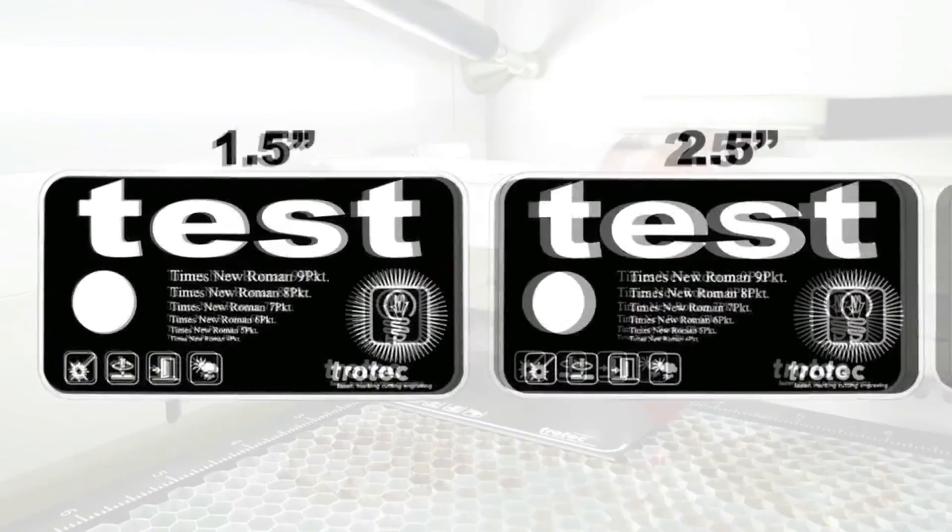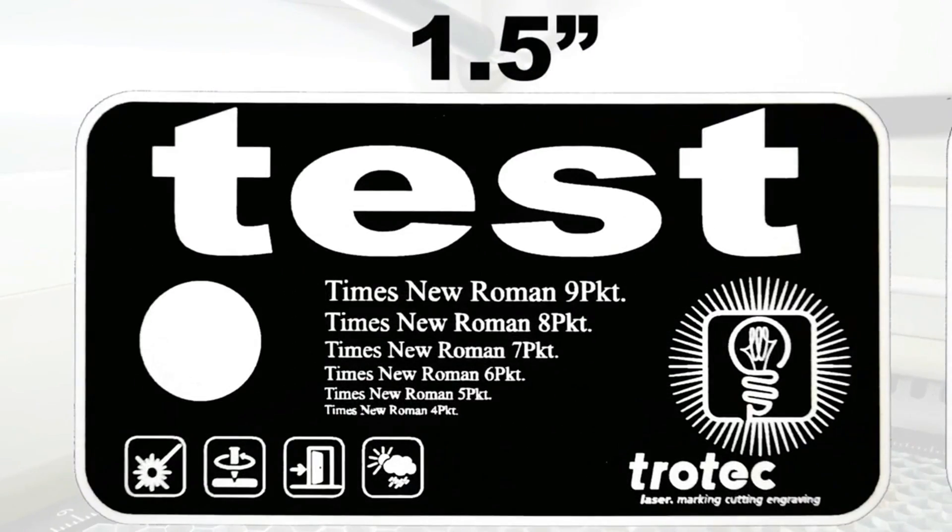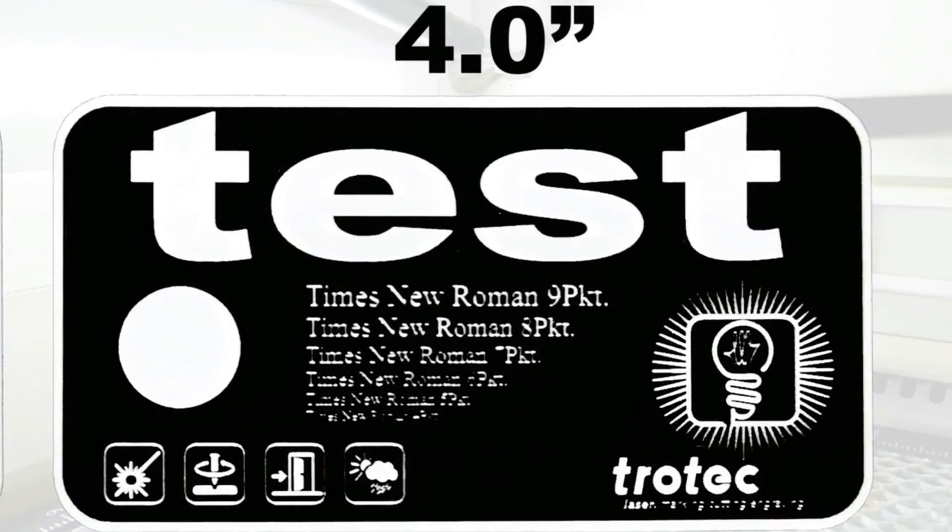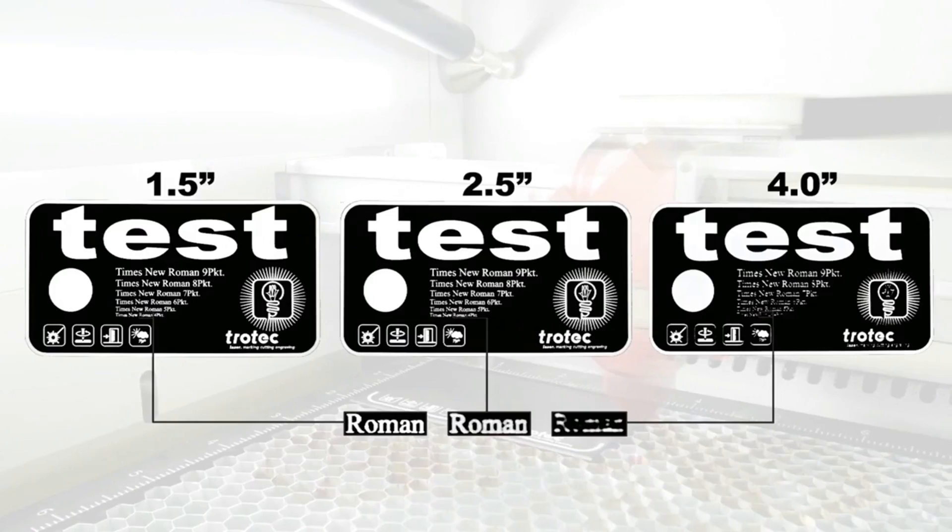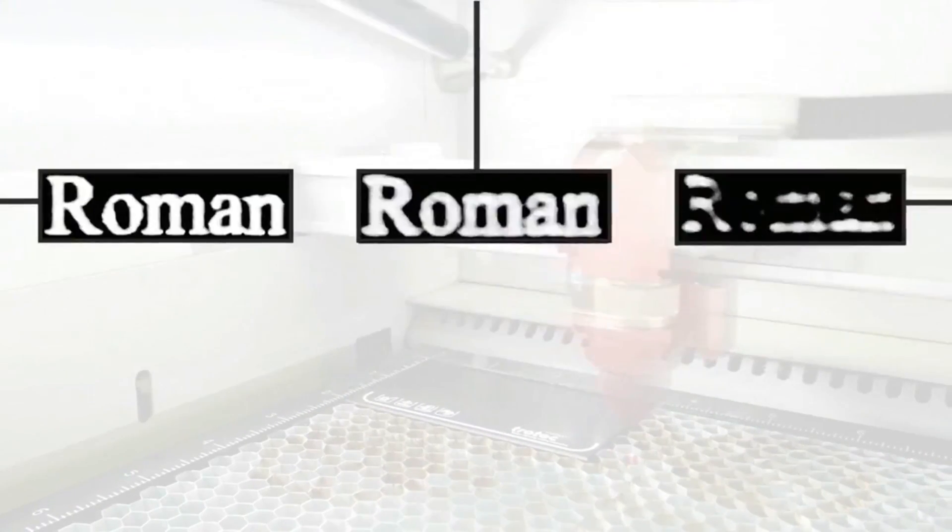We can see that the 1.5-inch lens is able to produce the clearest engraving in the areas where we have the smallest details, in contrast to the 4-inch lens where the details don't turn out as well.